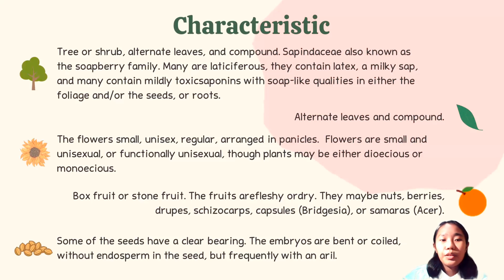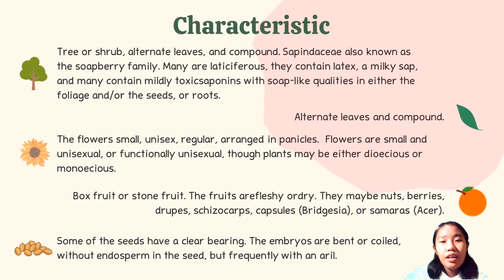They have alternate and compound leaves. The flowers of this family are small, unisex, regular, in racemes and panicles. The flowers are small and unisex or functionally unisex, so plants may be either dioecious or monoecious. Sapindaceae family bear both fleshy fruits or stone fruits. The fruits are fleshy or dry; they may be nuts, berries, drupes, schizocarps, capsules, or samaras. Some seeds have a clear aril. The embryos are bent or coiled without endosperm in the seed, but frequently with an aril.